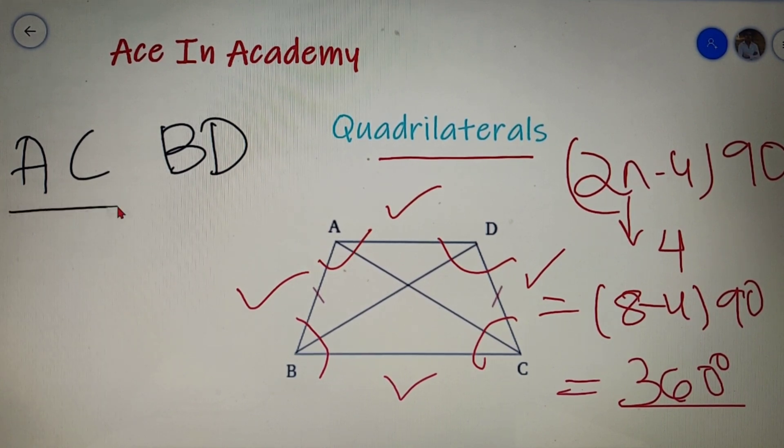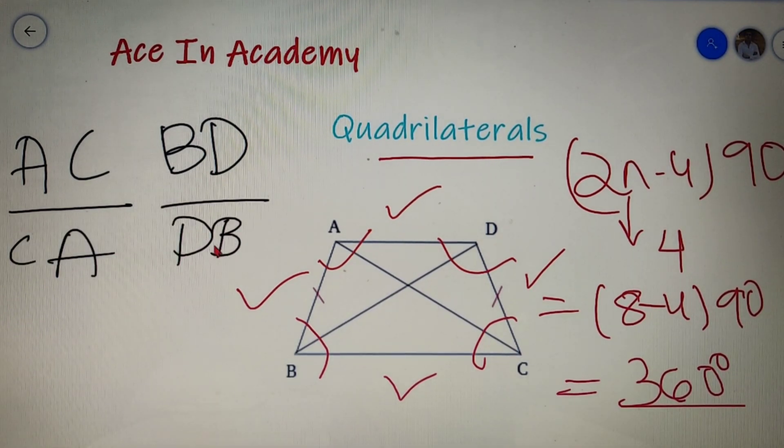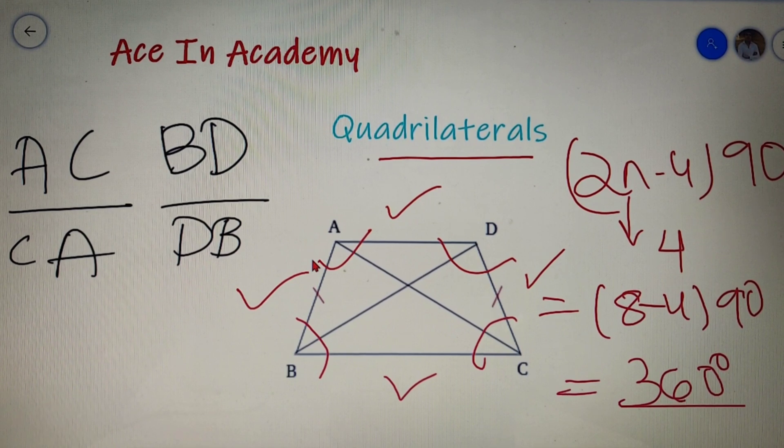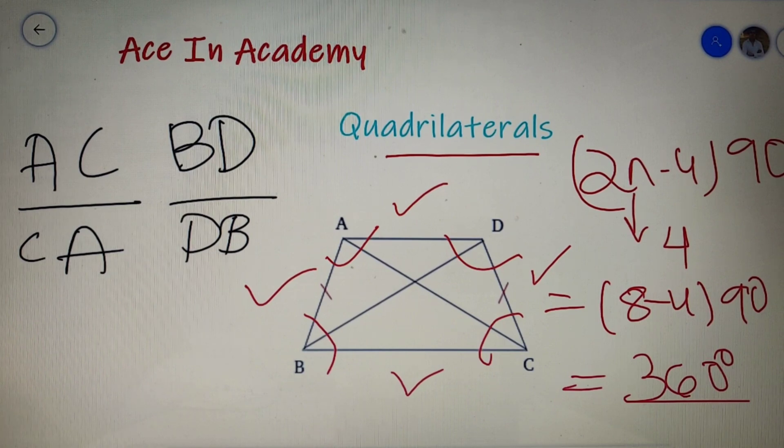You can name the diagonals as AC or CA or BD or DB, both are same. So giving you a quick summary about the quadrilateral: we can say that a quadrilateral has four sides, four angles and the sum of angles is equal to 360 degrees and it has two diagonals as well.